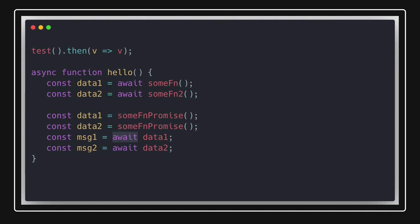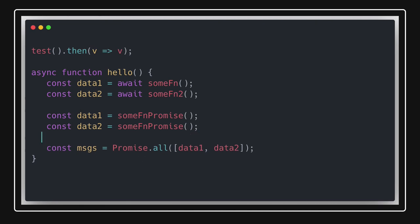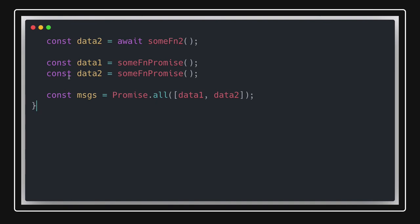Similarly, if you need to execute promises in parallel, put them inside `Promise.all([data1, data2])` — it accepts an array. The result will be an array of values you can capture as `messages`. Always remember: if two promises are independent, run them with `Promise.all`. If they are sequential and one depends on the other's result, then await them one by one but don't block unnecessarily.